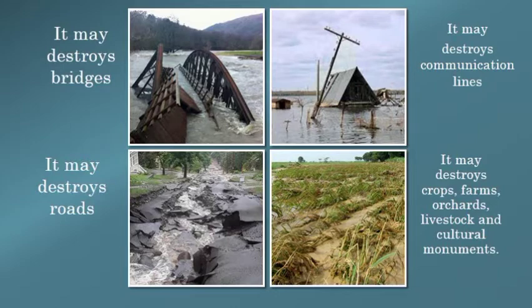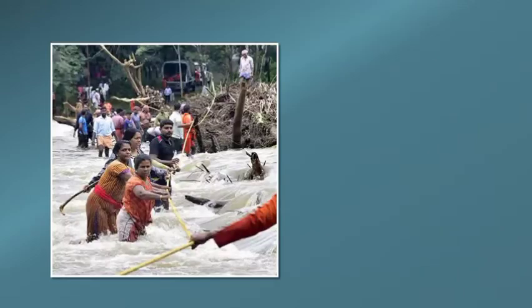It may destroy crops, farms, orchards, livestock and cultural monuments. کوئی بھی آس پاس کے علاقے میں فصل ہو، farms ہوں، باغ ہوں یا چراگاہیں ہوں — یہ ہر چیز کو تباہ کر دے گا۔ جیسے کہ آپ picture میں دیکھ رہے ہیں کہ جو پکی فصل ہے وہ بھی سیلاب نے خراب کر دی ہے — جب پانی فصل کے اندر بھر جائے گا تو فصل بھی تباہ ہو جائے گی۔